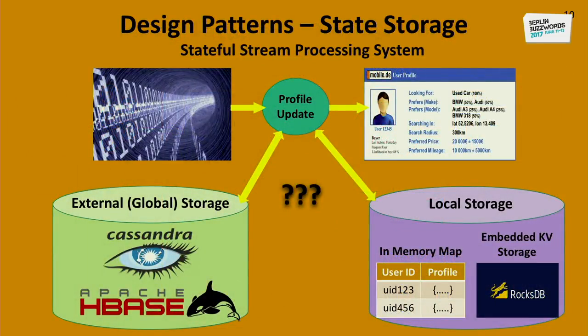When building such a system, there is one major decision to make: how will the state be managed, and where will it be stored? There are two major approaches. The more traditional approach is to use external storage - also called global storage or central storage. Storages such as Cassandra and HBase are popular choices; they are distributed and scalable by themselves. Another approach, which is more innovative and gaining traction, is to use local storage. Local storage could be in the form of an embedded key-value storage, for example RocksDB, or any kind of simple in-memory map.